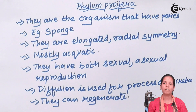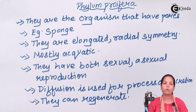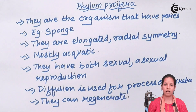Sponges have the ability to regenerate. Totipotency is the ability to regenerate and get body parts back. Whereas we humans are pluripotent — we cannot get our body parts back or regenerate them when there's a cut or an organ is torn apart.